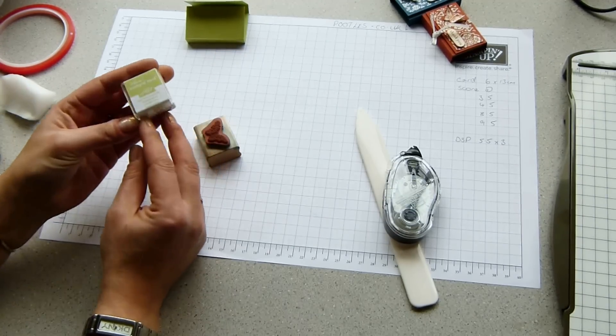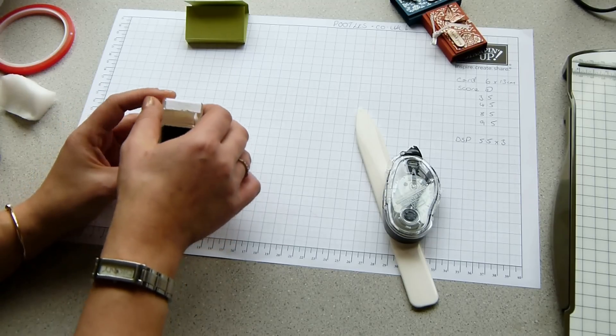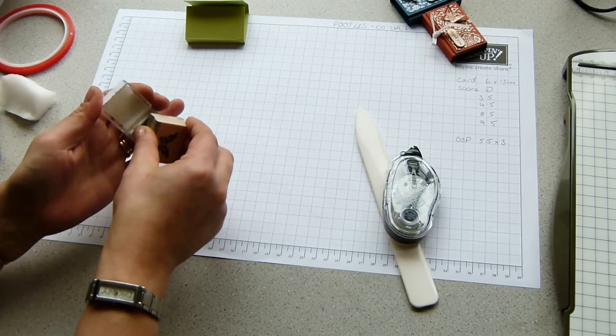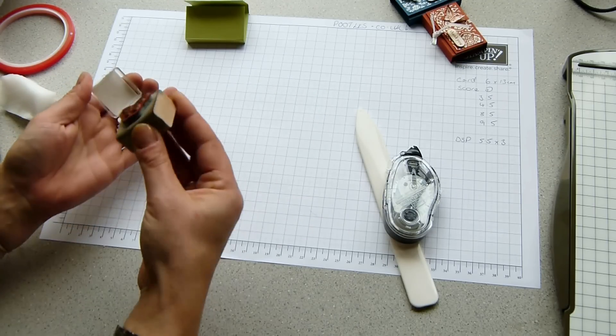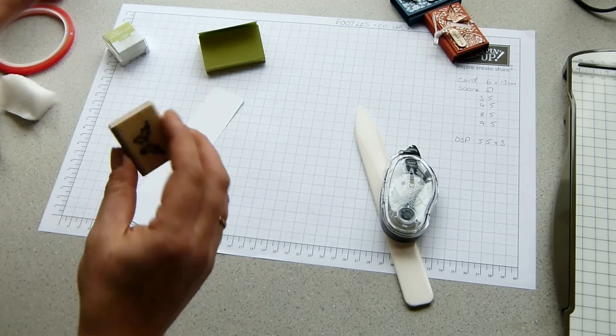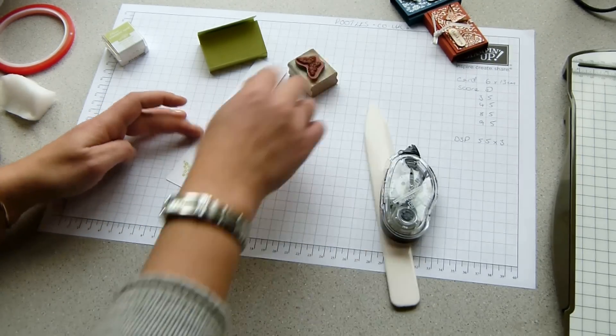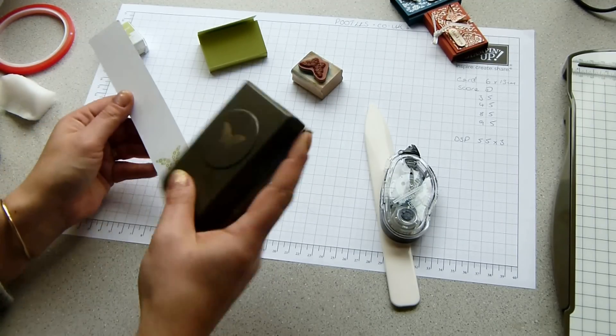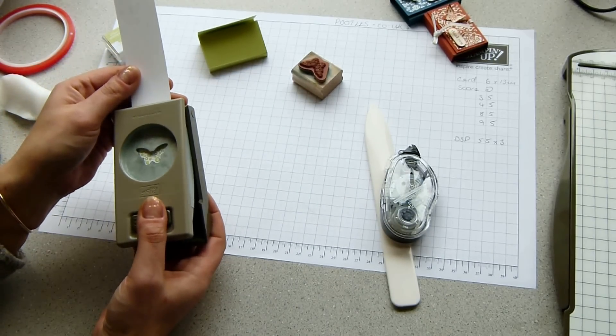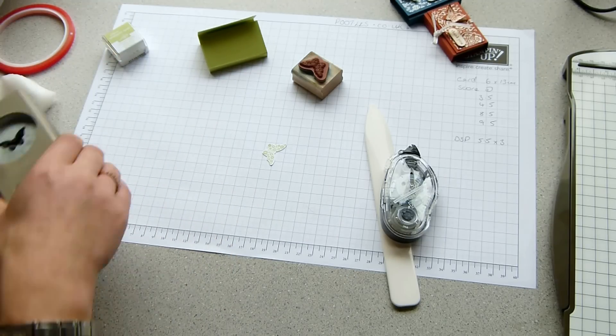And with some Certainly Celery, this is a little stamping spot and it comes in a set of 11 different colors. They're a mixture of some of the brights, some of the subtles and the neutrals. So I'm just going to ink that up. And I'm using Whisper White cardstock because this is a white background in here. So I'm just going to stamp up my butterfly. There we go. And punch it out with the matching punch. This is the small butterfly and it's in the spring summer catalog at the moment.